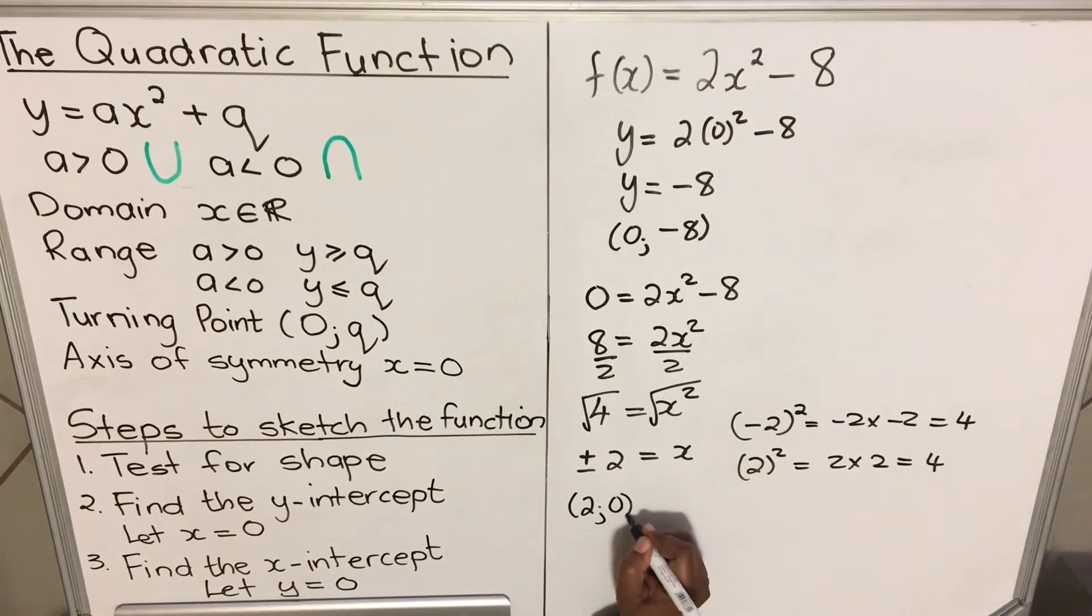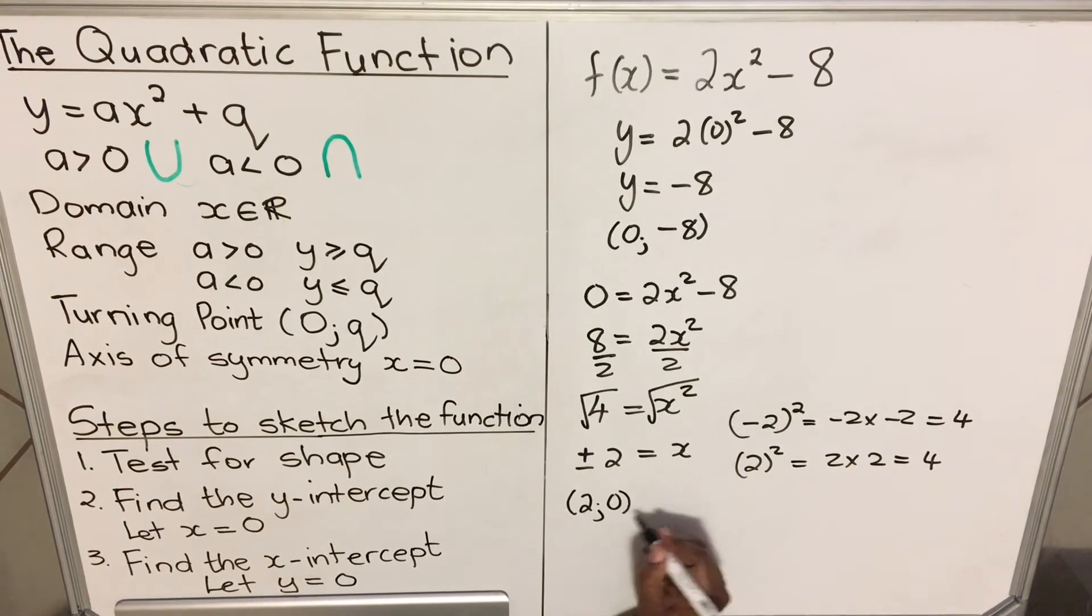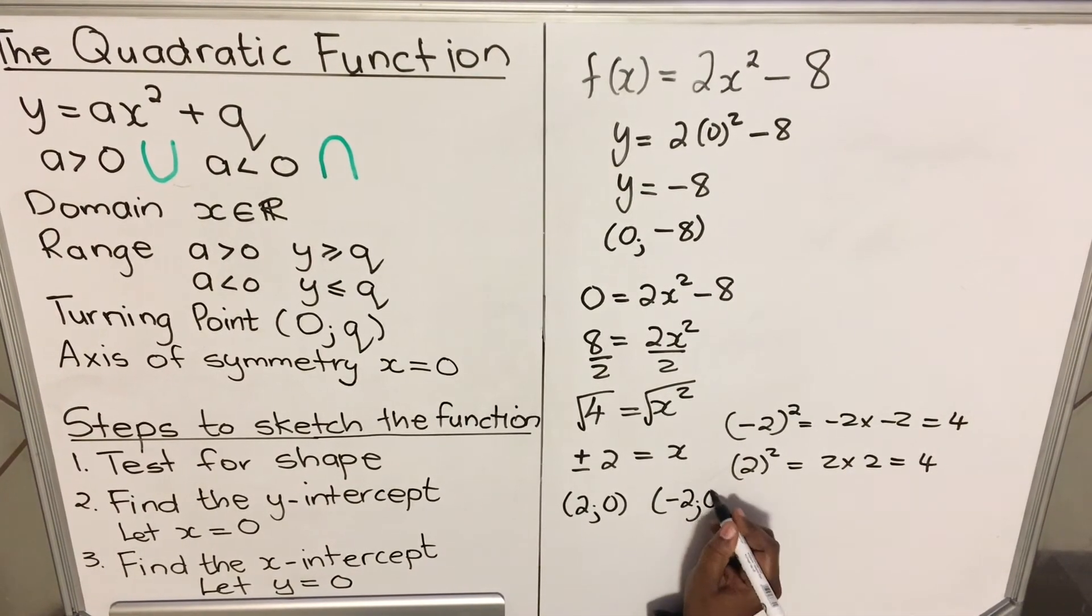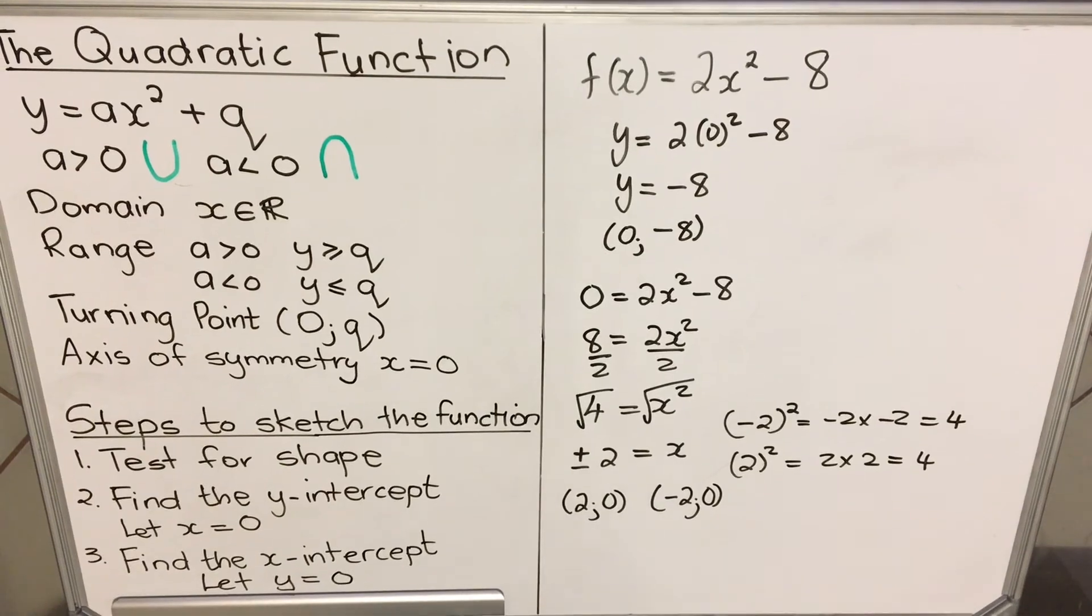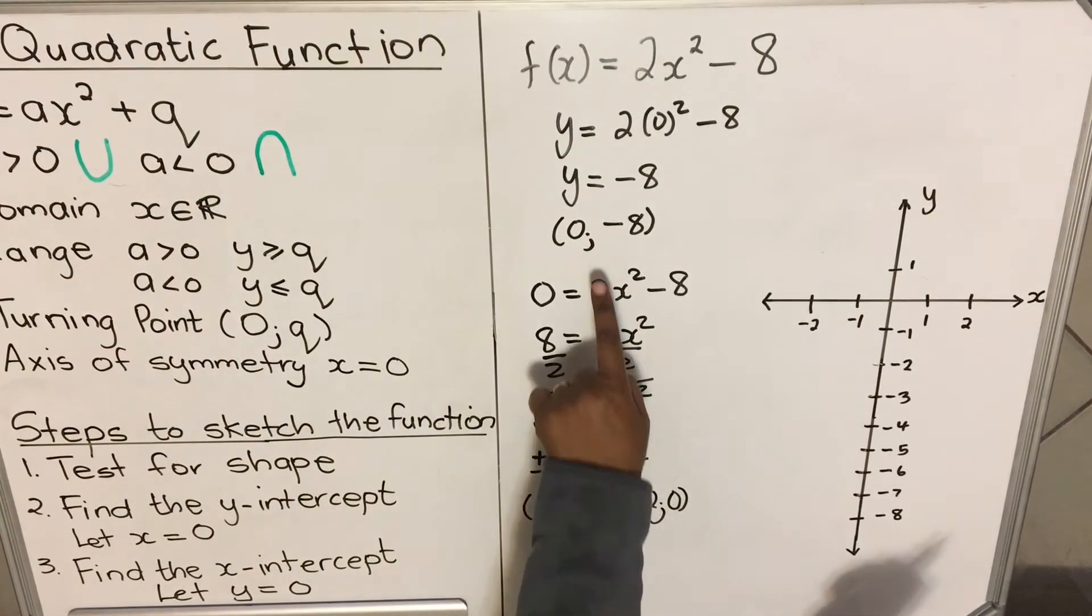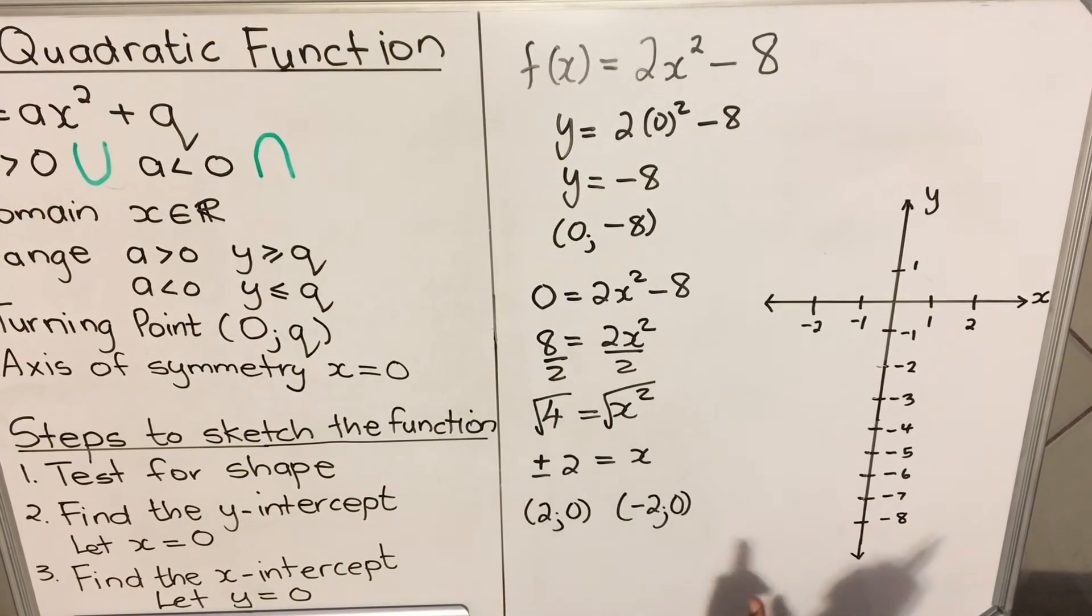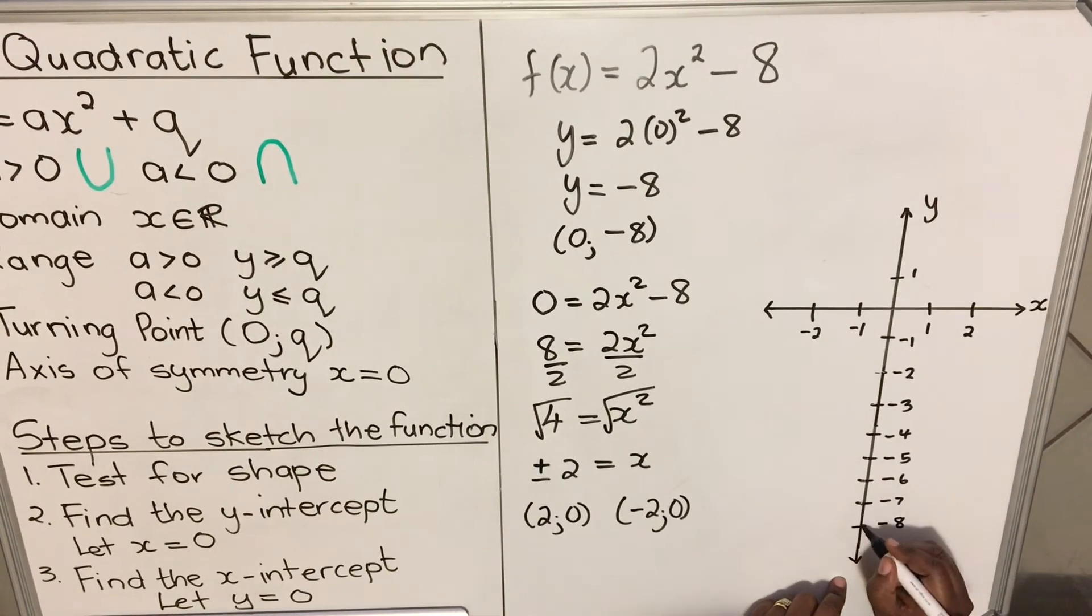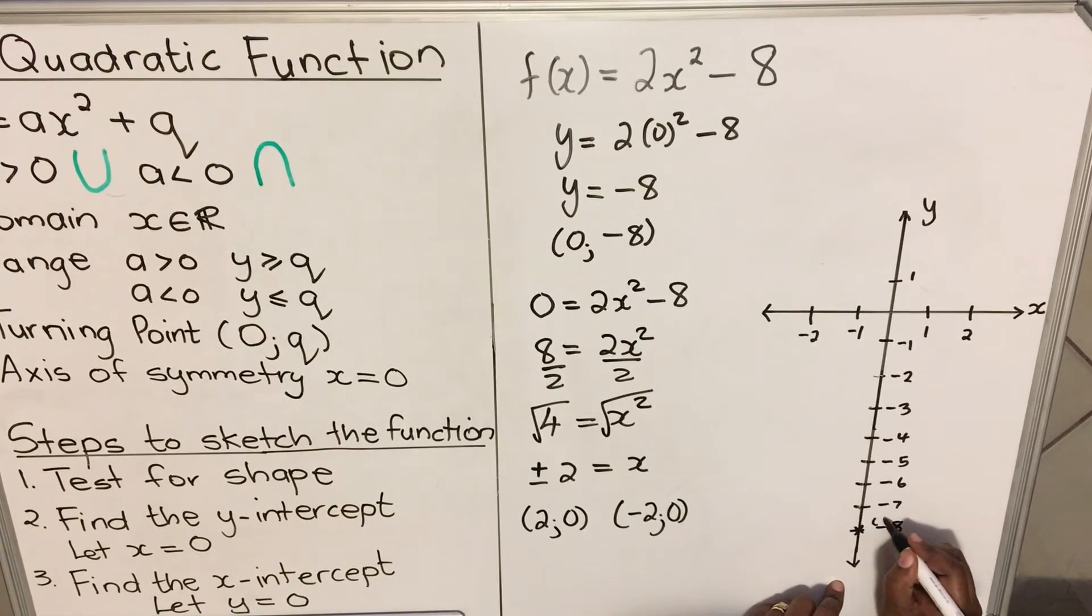This is your x-intercept, but it can also be negative 2. So both of these values are correct. Let's draw our function. The first coordinate is (0, -8). Zero is on top of the y-axis, so it's this coordinate: zero and minus 8.